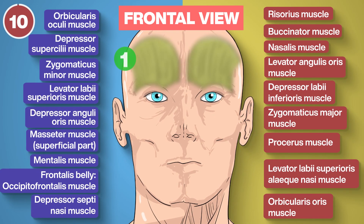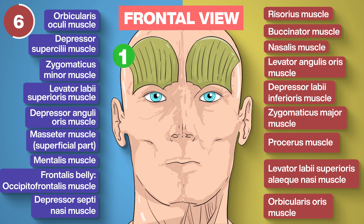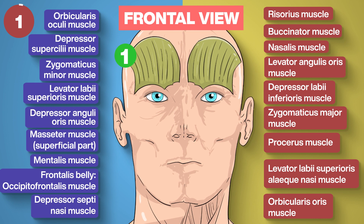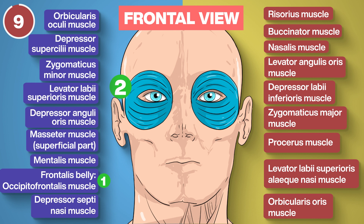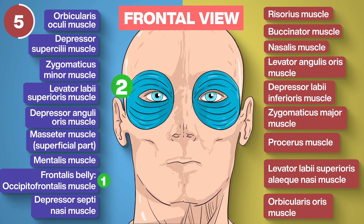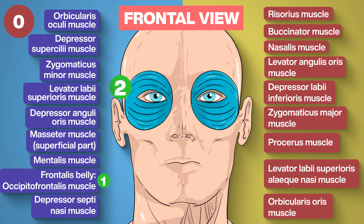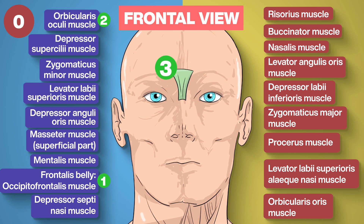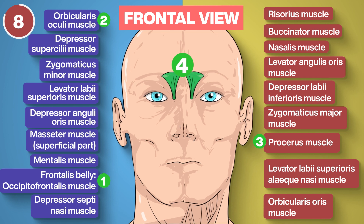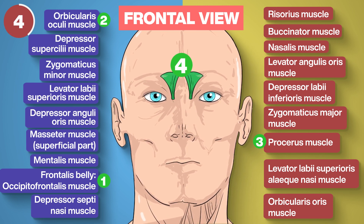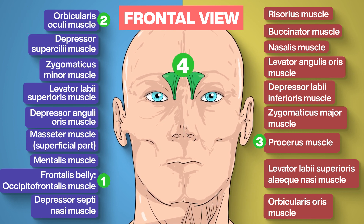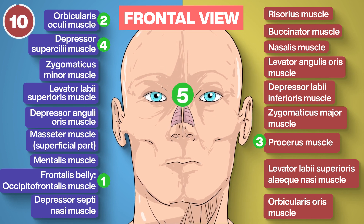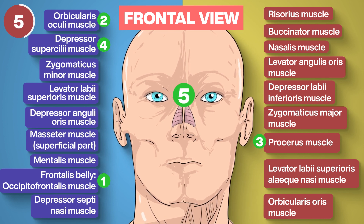Muscles of the face — frontal view. Number 1: Frontalis belly, occipitofrontalis muscle. Number 2: Orbicularis oculi muscle. Number 3: Corrugator muscle. Number 4: Depressor supercilii muscle. Number 5: Nasalis muscle.